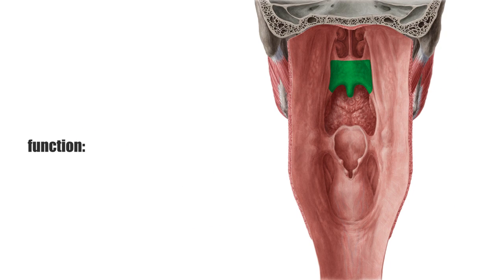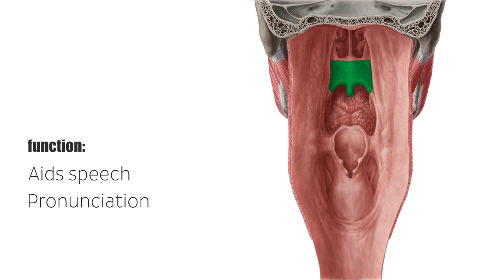The soft palate is multifunctional and aids speech and the pronunciation of velar consonants along with the dorsum of the tongue. When swallowing, it rises to close the nasal passages and prevents any food or liquid from entering into the nasal cavity. It does the same thing for the larynx when sneezing. The uvula helps produce the gag reflex when touched.